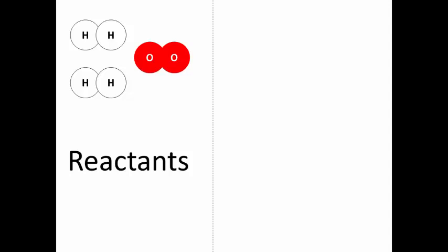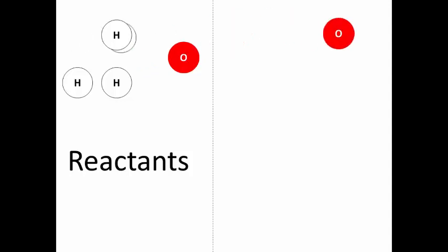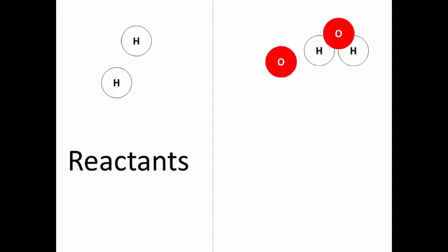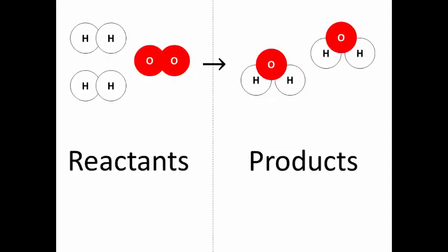What that means is that they actually come apart. The bonds between the H's break, the bond between the O's break, and then the atoms rearrange. They get other partners — they go and bond with something else. This oxygen goes and bonds with two hydrogen atoms, and this oxygen goes and bonds with those two hydrogen atoms. So a reaction is simply a rearrangement of atoms: atoms that used to be bonded together break apart and then get bonded to something else.